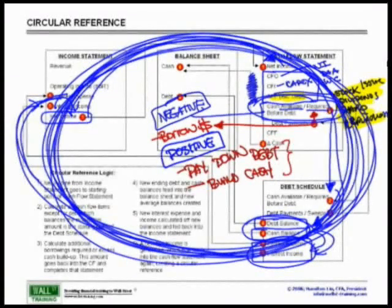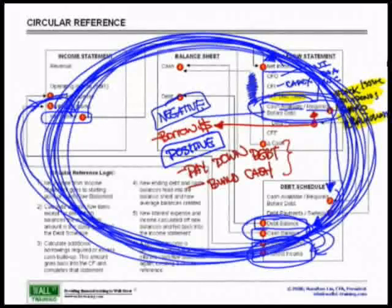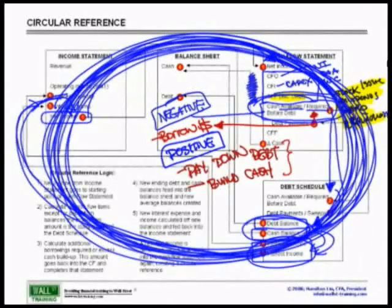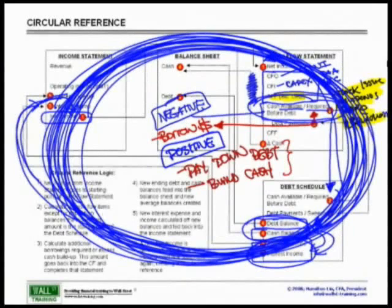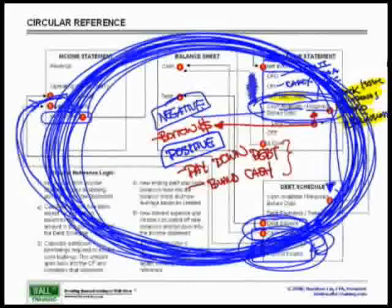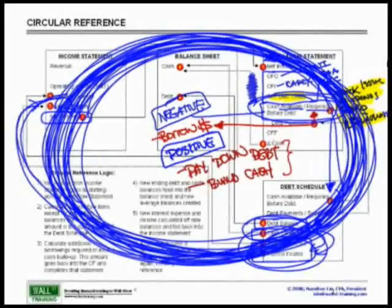This circular reference in financial modeling building is required in order to be a little bit more precise with your cash flows. What exactly does that mean? Once again, let's quickly reiterate this: you need a net income number to calculate your cash sweeps, your cash availability, which determines a brand new debt balance and cash balance, which then dictates a brand new interest expense and income back to net income. And again, that is why you have a circular reference.